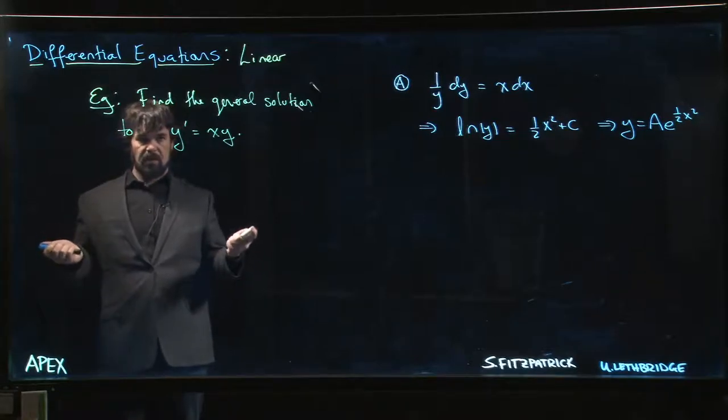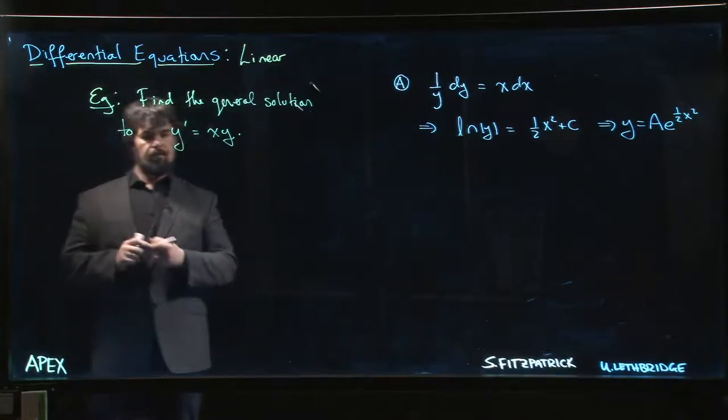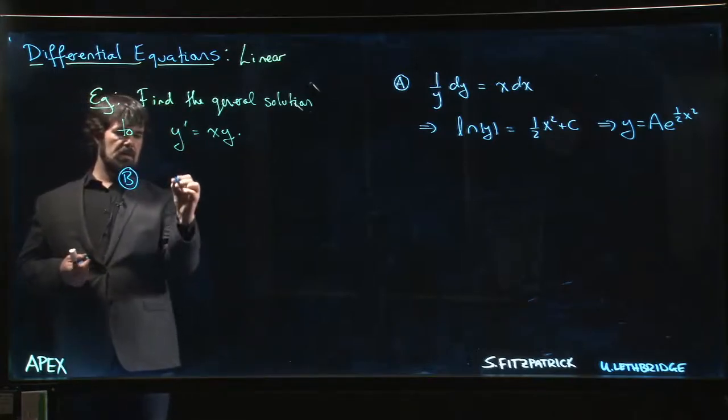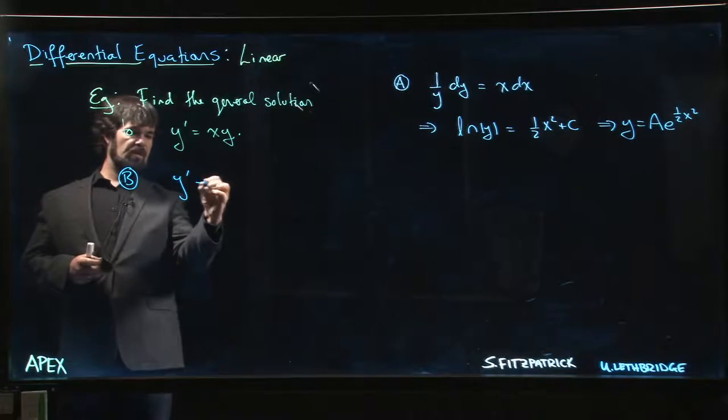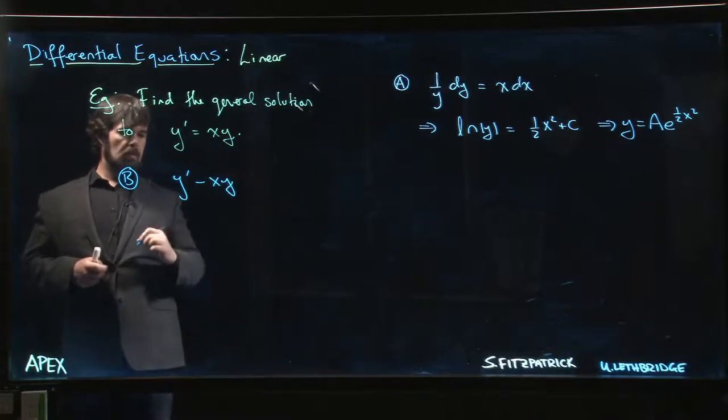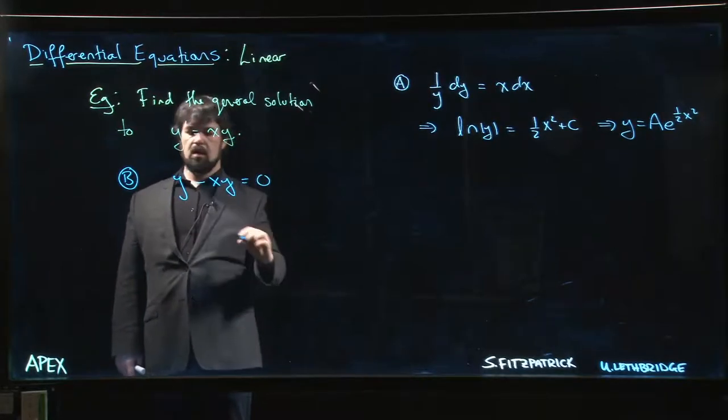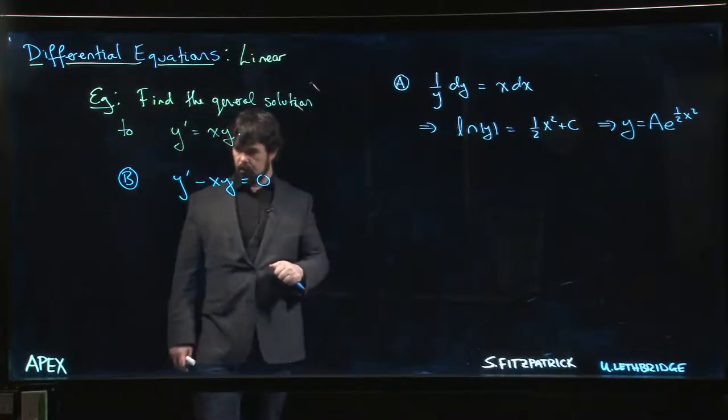But we want to practice working with linear equations, right? So let's do sort of option B. Rewrite this in the standard form: y prime minus xy equals 0.